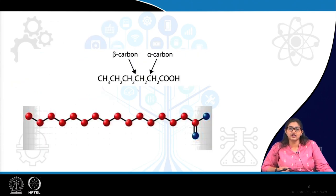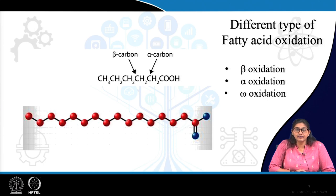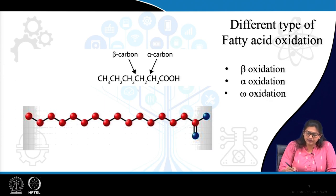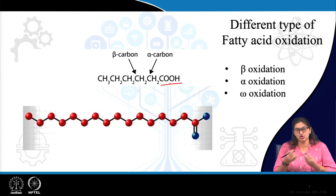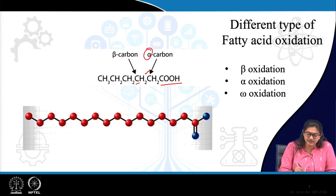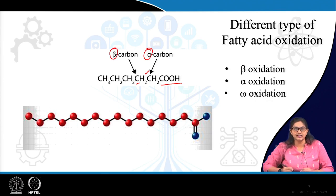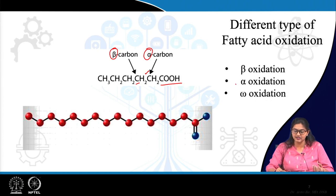Let us move on to the oxidations of fatty acids. Fatty acid oxidations can be of different types based on which carbon is actually oxidized. Fatty acids are carboxylic acids containing long aliphatic chains with a carboxyl group. The first carbon adjacent to the carboxyl group is known as alpha carbon; the next is beta carbon, then gamma, delta, and so on. When oxidation occurs at the alpha carbon, that is alpha oxidation; if at the beta carbon, that is beta oxidation.